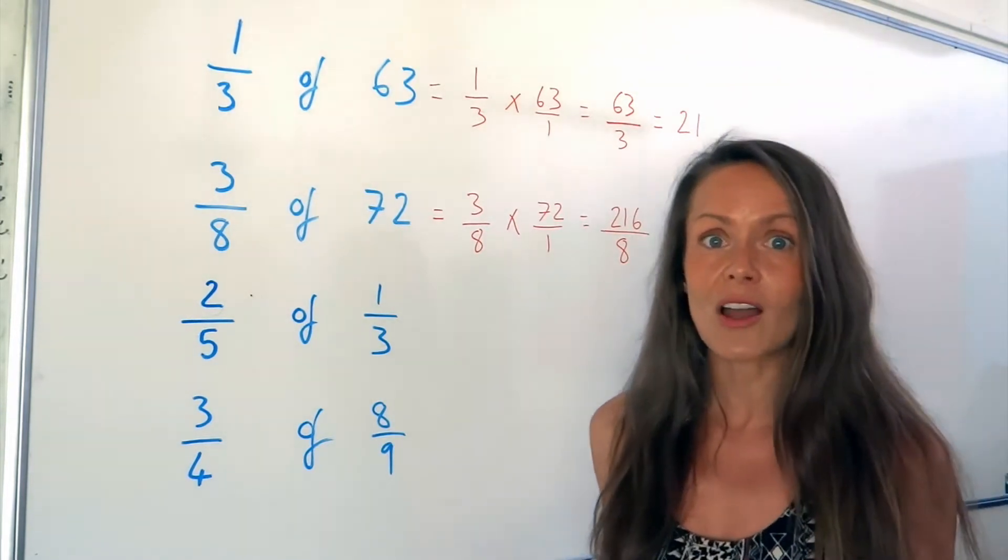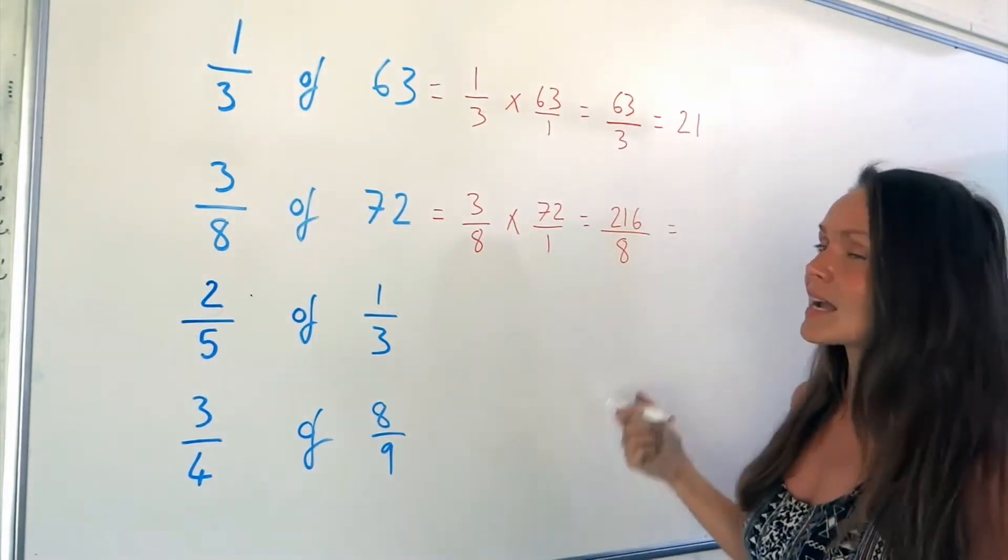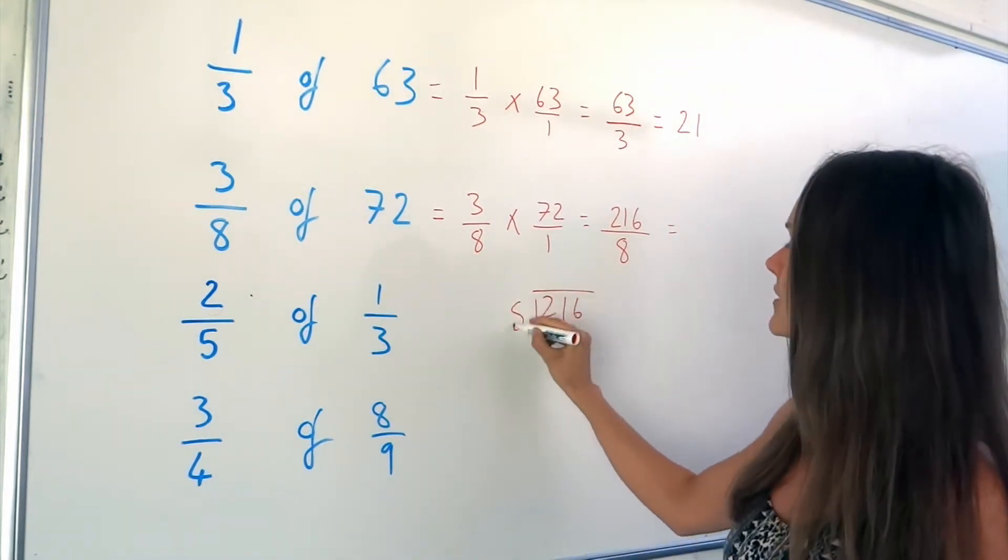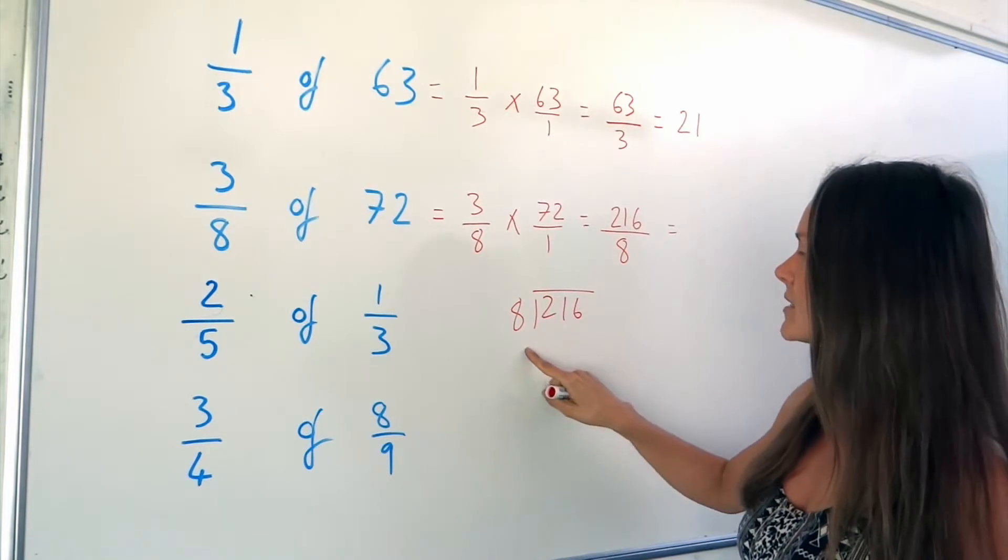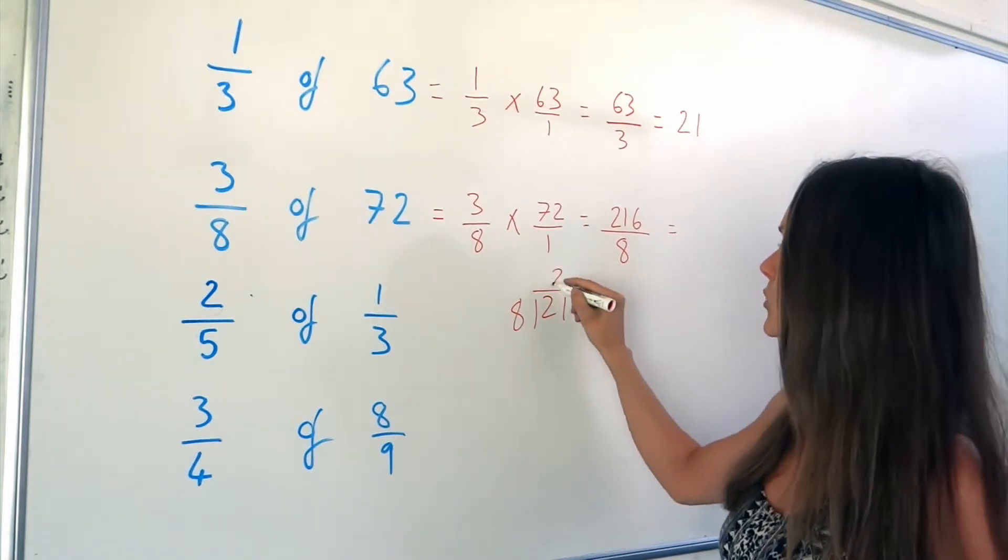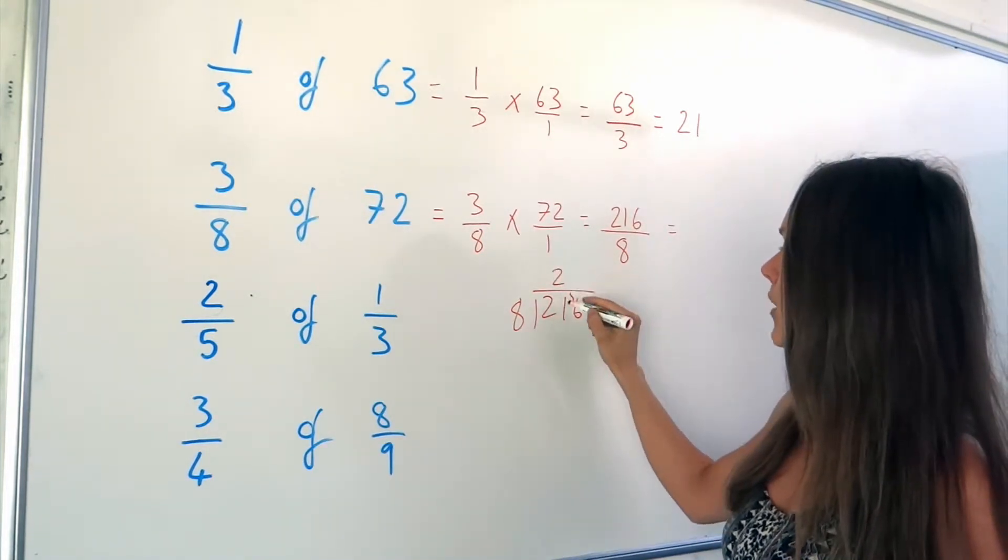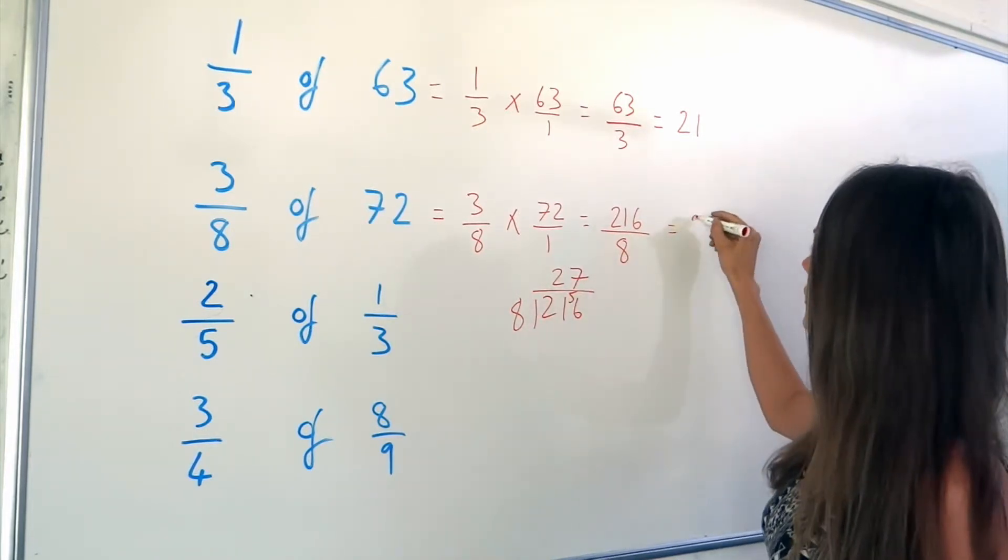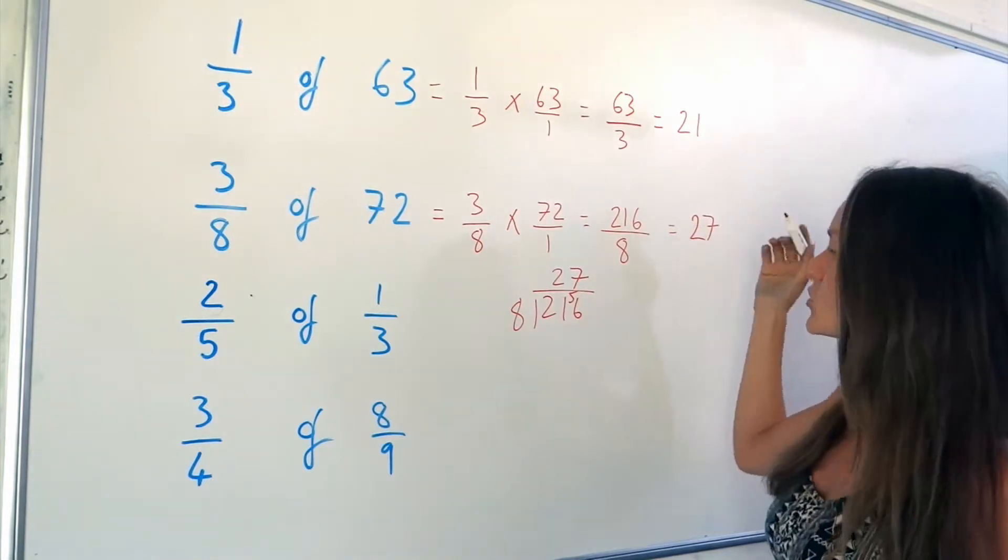Always try and simplify your answer. Well, this one is exactly divisible by 8. I can divide 216 by 8 because 8 goes into 21 two times. And there's a remainder of 5. And 8 goes into 56 exactly 7 times. So the answer is in fact 27.